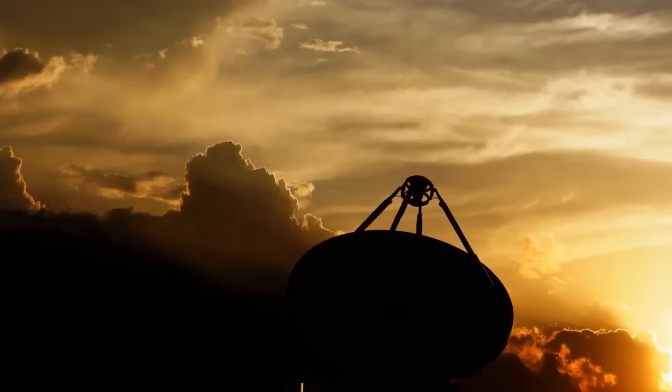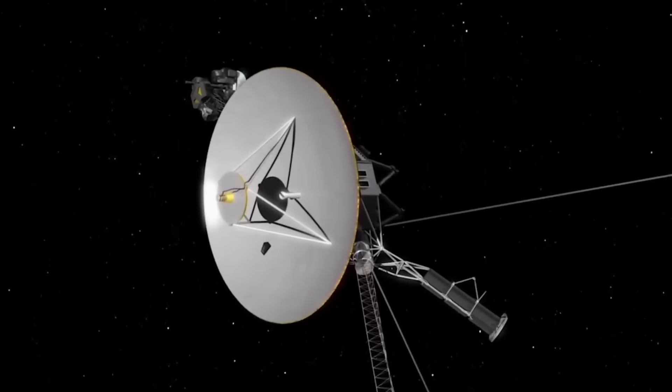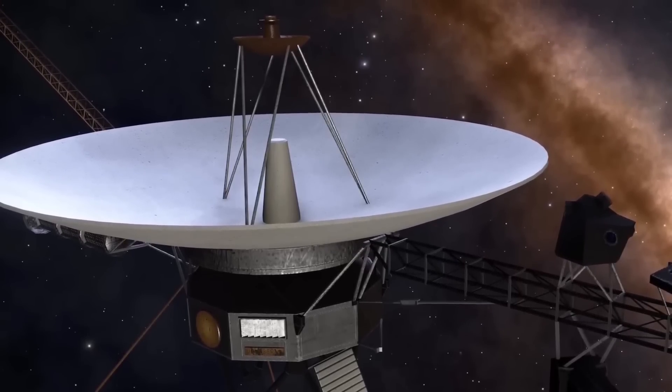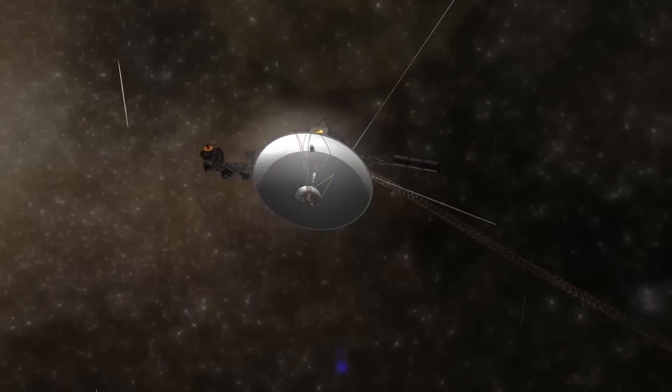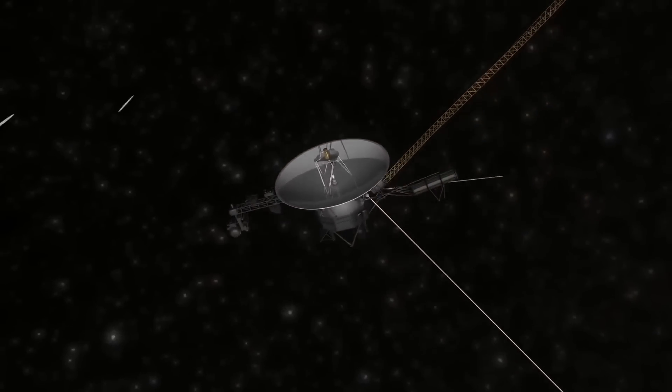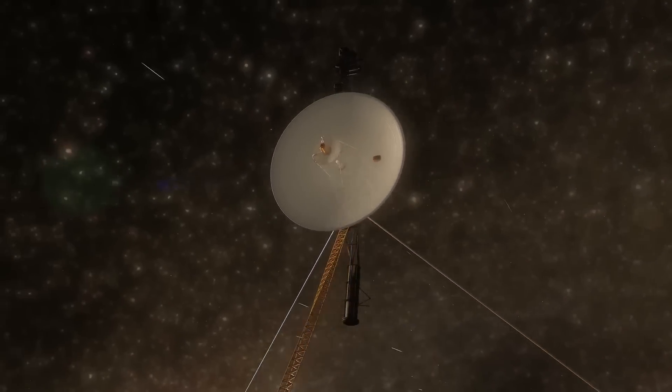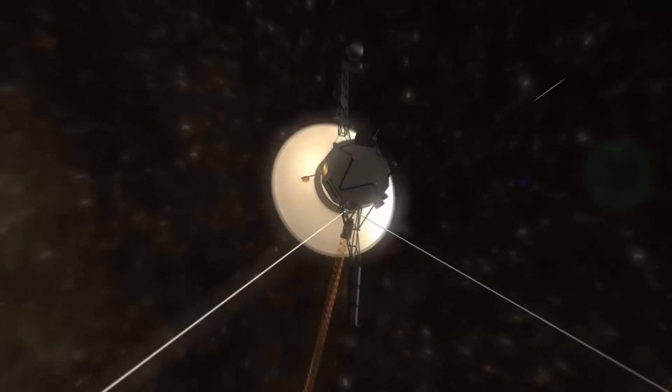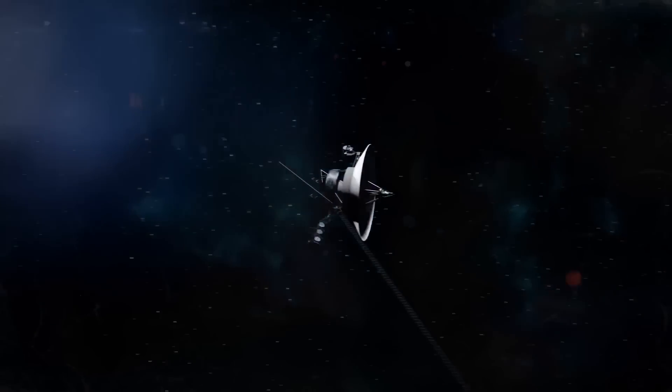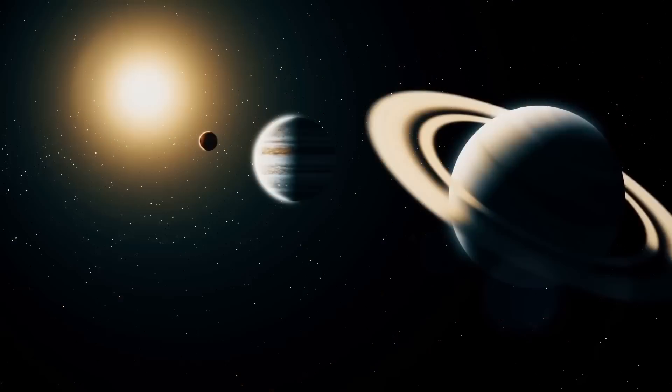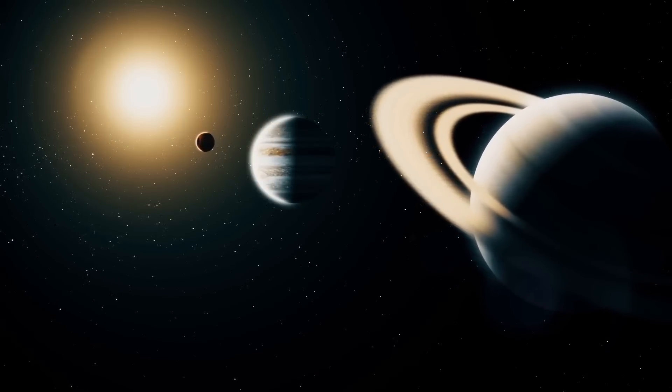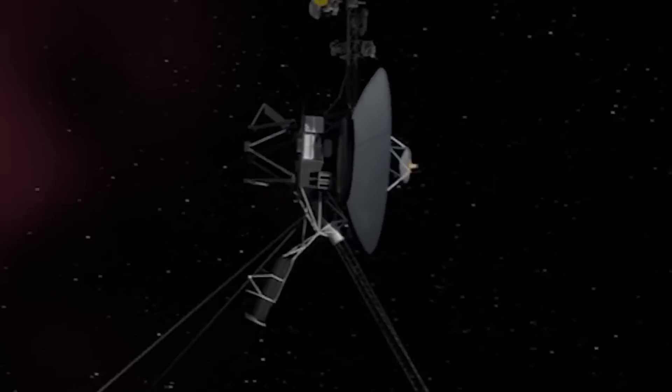NASA's twin Voyager spacecrafts are true time capsules from their generation, equipped with an 8-track tape recorder to store data. With a capacity billions of times smaller than that of today's mobile phones, they transmit information at a speed up to 38,000 times lower than a modern connection. And yet, these pioneering operations continue to sail beyond the solar system, traversing the vast galactic ocean known as space, where no other probe has gone before.